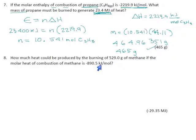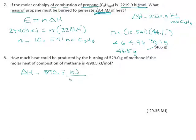Next one: how much heat could be produced by the burning of 529 grams of methane? Again, they give us the delta H, and you can tell because it's kilojoules per mole — so that's a great number to have. We have 890.5 kilojoules per mole of methane.